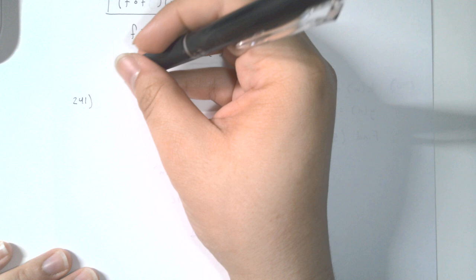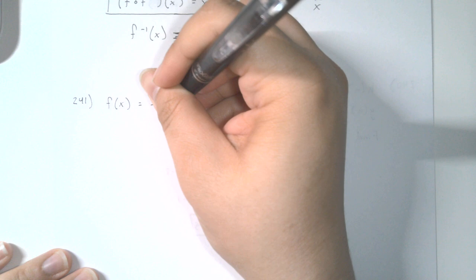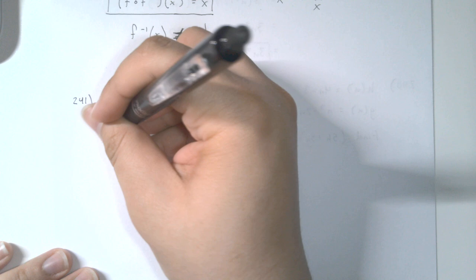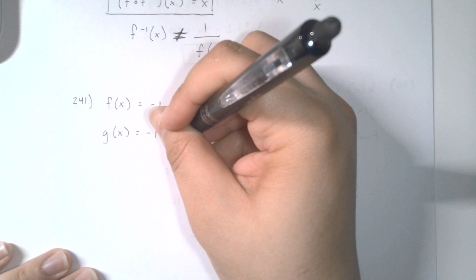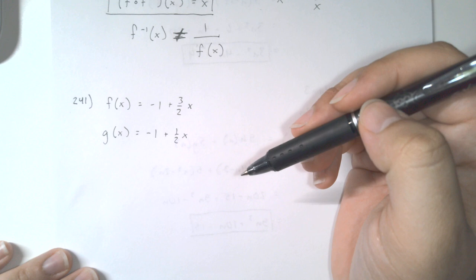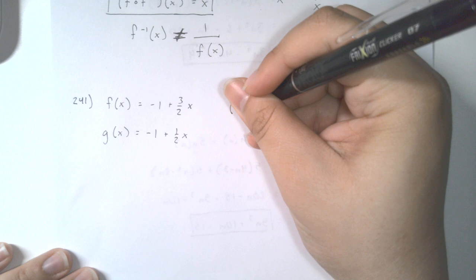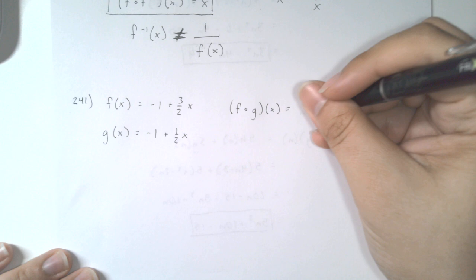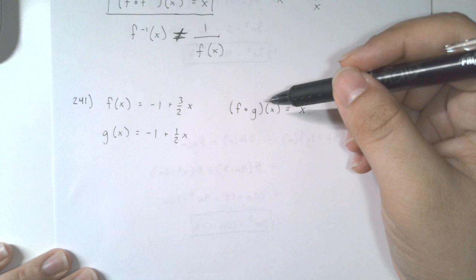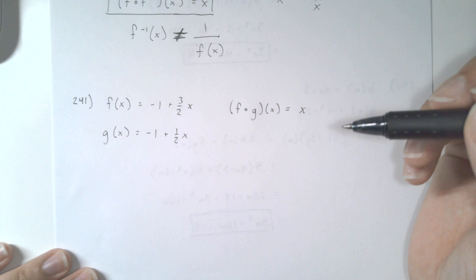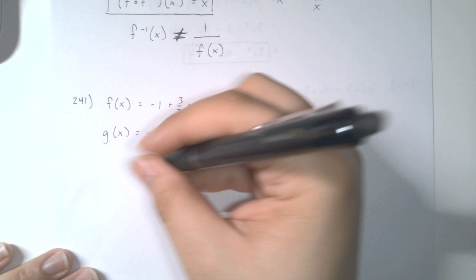That's going to be kind of nice. So first let's do one algebraically for problem 241. We have f of x is equal to negative 1 plus 3 over 2 times x, and we have g of x is equal to negative 1 plus 1 half x. We want to verify: are these inverse functions or not? If they are inverse functions, then we should get that f composed with g of x is equal to x.